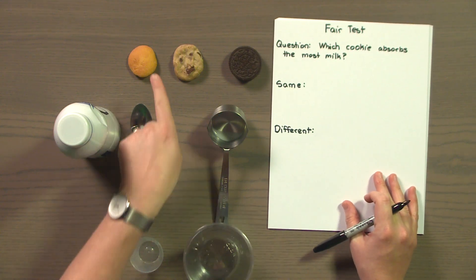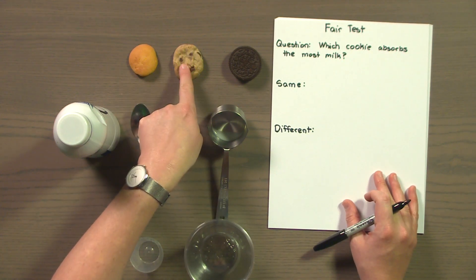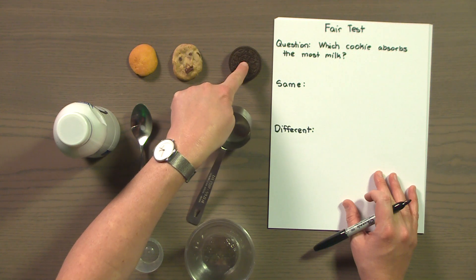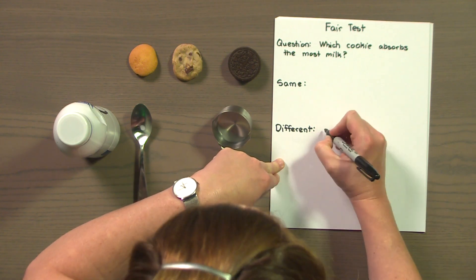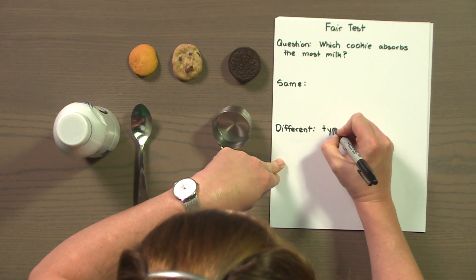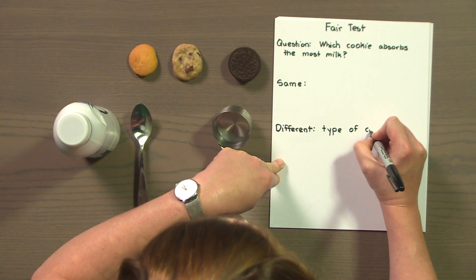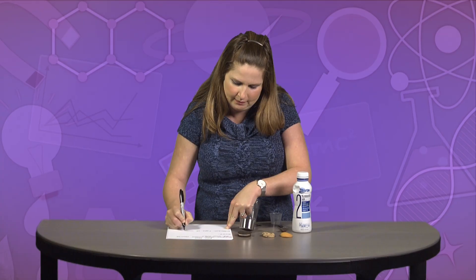So here I have a Nilla wafer, a chocolate chip cookie, and an Oreo. This is what's going to be different. Now everything else has to be the same, so I'm going to think about all the things that need to stay the same. Turn to the person sitting next to you and whisper something you think needs to be kept the same to make the test fair.